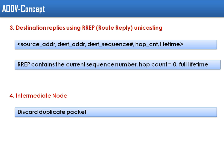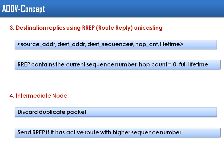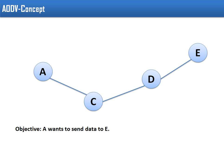An intermediate node, whenever it hears a duplicate packet, will discard it. Also, if a sender is requesting a route and broadcasting the route request packet, and an intermediate node already has updated information about the destination, instead of re-broadcasting the route request packet, that intermediate node will send a reply directly to the sender.